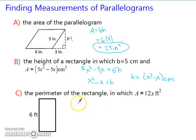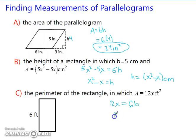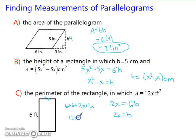Let's look at part c. We want to find the perimeter, and we're given the area. We know that base times height gives us our area, so we have 12x equals 6 times the base. Dividing both sides by 6, we get 2x equals the base. Now that we have our base and height, we can add: 6 plus 6 plus 2x plus 2x, giving us 12 plus 4x feet, which is the perimeter.